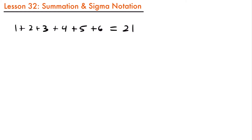That was easy enough to calculate, but as we begin to add more and more numbers, this would take a while to write out. For example, if we wanted to add the numbers from 1 through 100, it would take a while to write all those values out. This is where the idea of sigma notation comes into play — we have an easier way to represent the sum of a series of terms. For this specific scenario where we added the numbers from 1 to 6, using sigma notation would look like this.